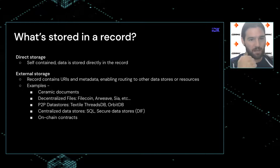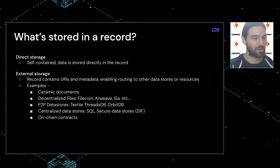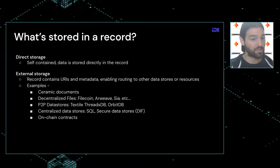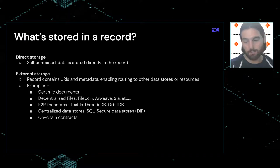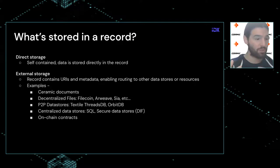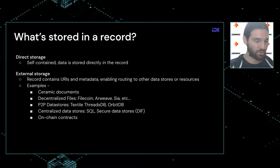You can do the same thing with Filecoin files or files stored on any decentralized durable storage network. You could point to Textile data stores, Orbit data stores, other centralized versions, or even on-chain contracts — serving as a technology-independent way to use records as data stores or pointers to additional data stores, which all serve to organize information.